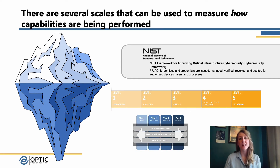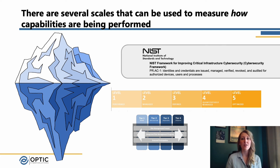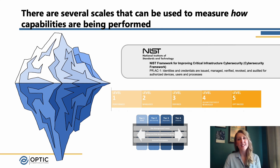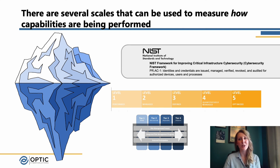Here we have a few examples of different types of scales that can help us with measurement, such as the CMMI maturity scales and the NIST Cybersecurity Framework tiers. Both of these can help us get an understanding of not just what the outcome is that we're working towards, but how sophisticated those capabilities are and how robust, consistent, and formalized they are. These are just two examples of potential scales that can be used to help us measure those cybersecurity outcomes.